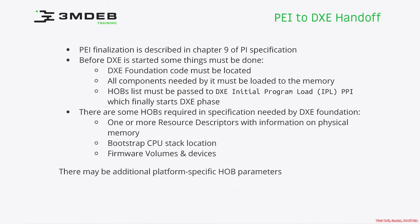There are some HOBs required by the specification. DXE expects certain information from the previous phase. First is the Resource Descriptor HOB, which describes established physical memory — a result of PEI's memory training and initialization. Then there is stack location information for cleanup or reuse. And of course, firmware volumes and devices related to firmware storage, which are needed by DXE to continue execution.